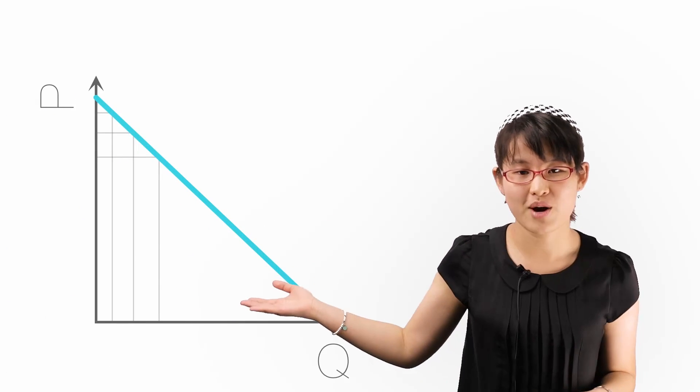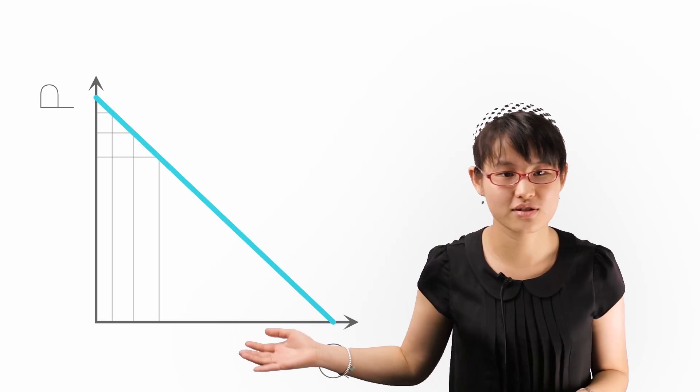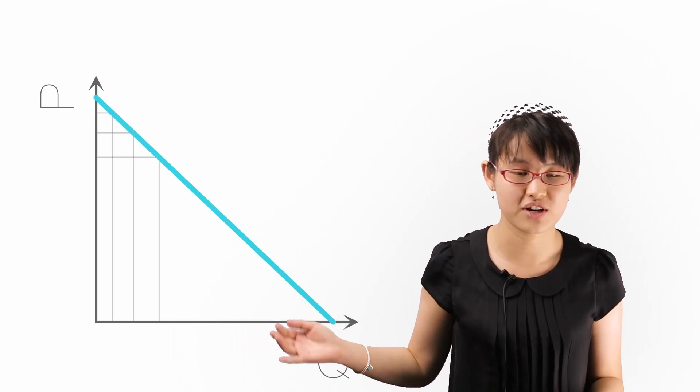This is the demand curve of the price discriminating firm and it tells us the maximum price consumers are willing and able to pay for each quantity of good.